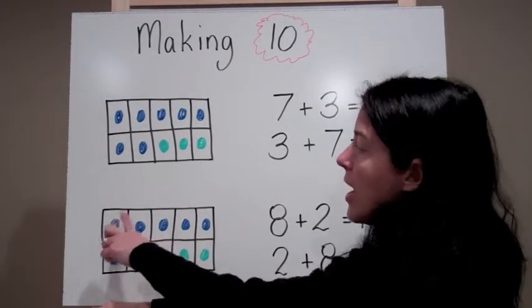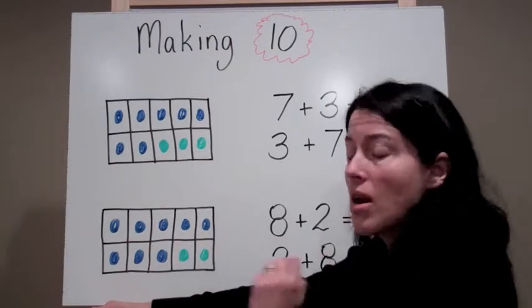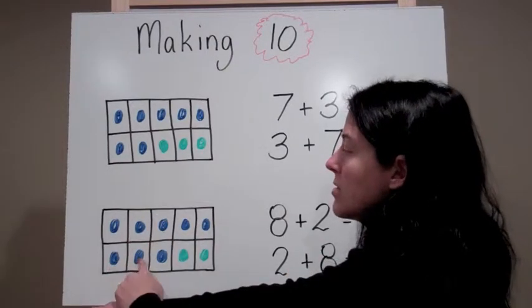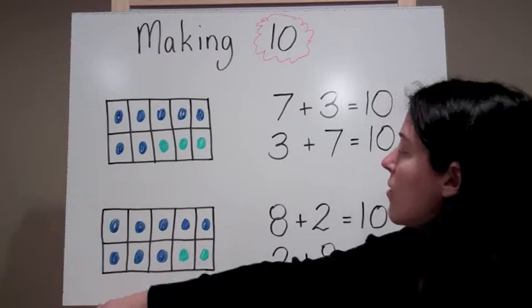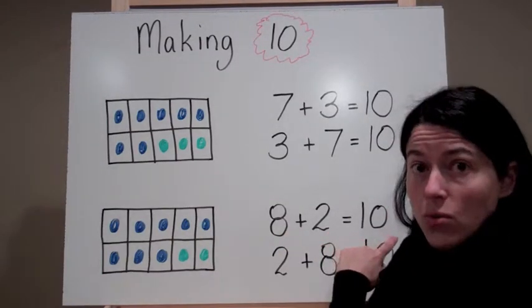Down here, I have a tens frame and I have 5 plus 3 more, 6, 7, 8. So I know that 8 plus 2 equals 10.